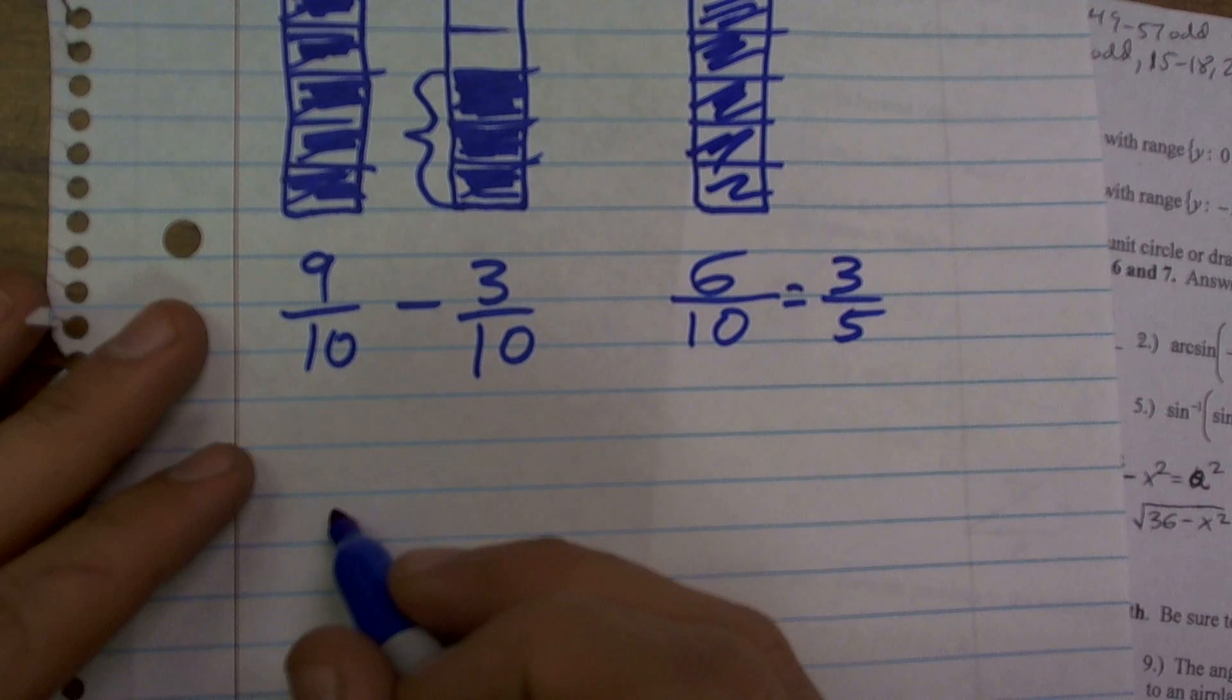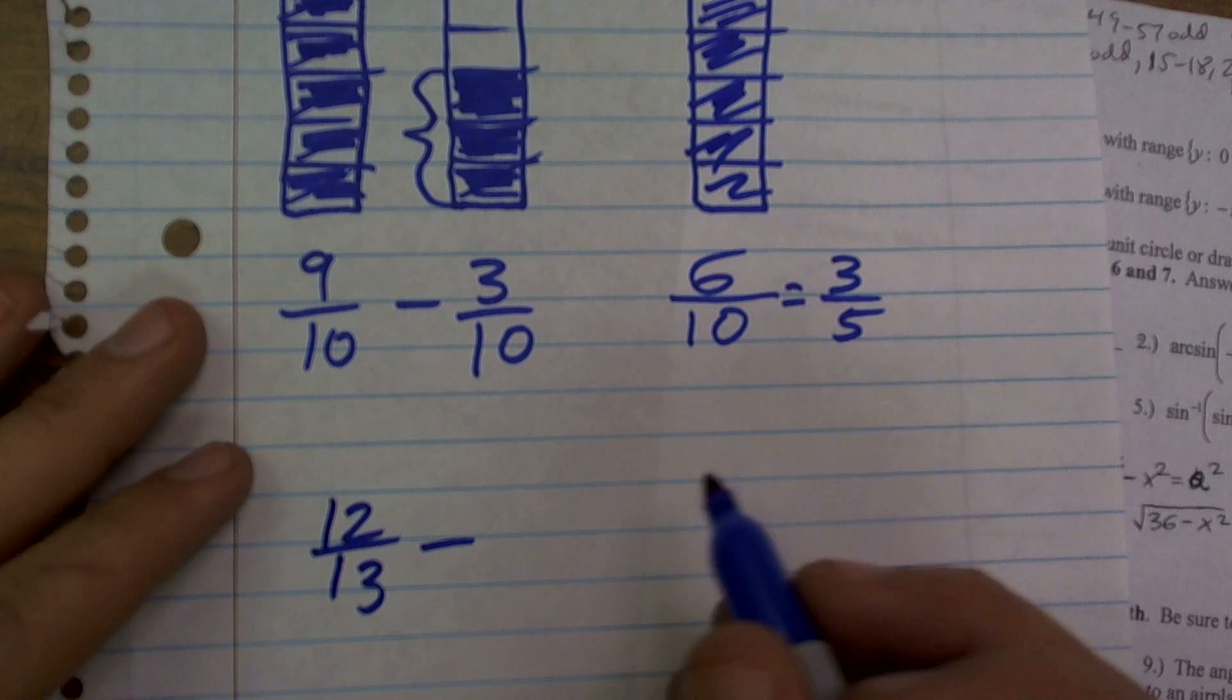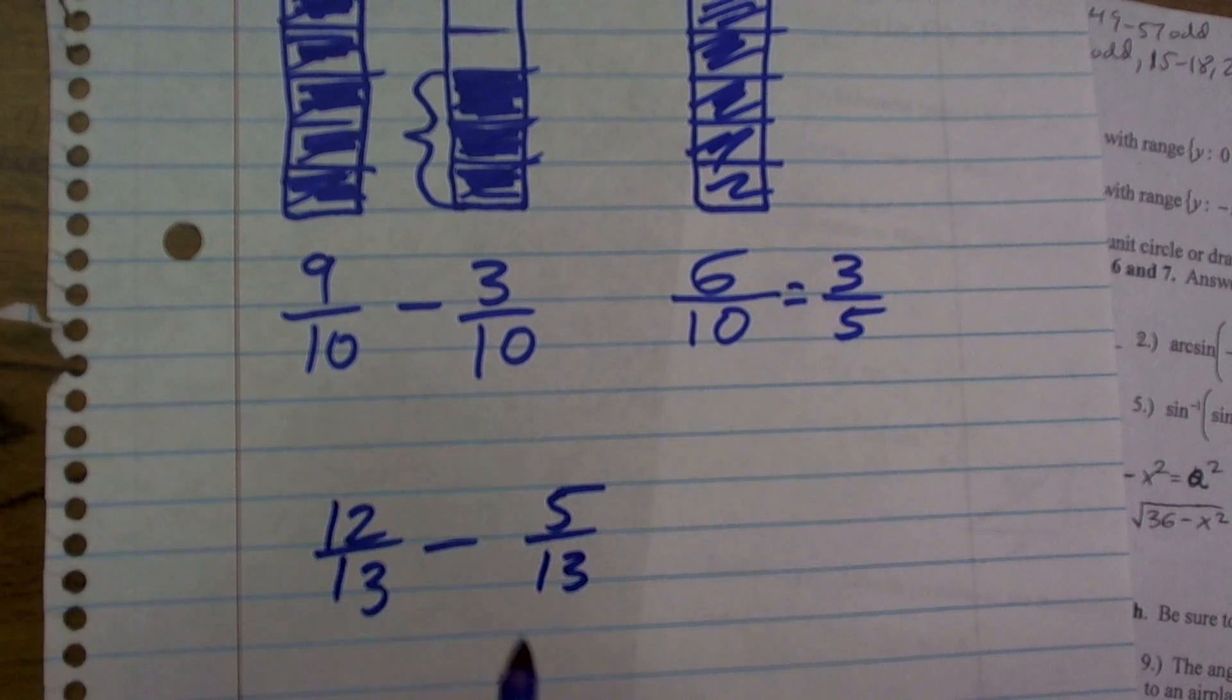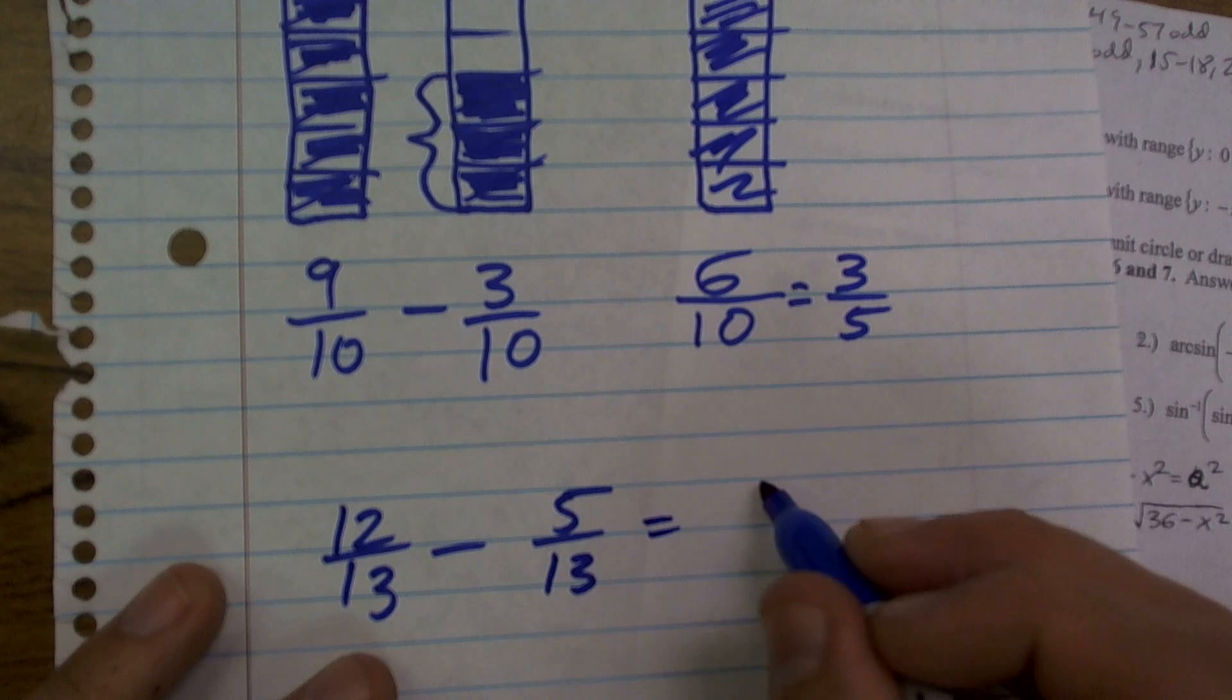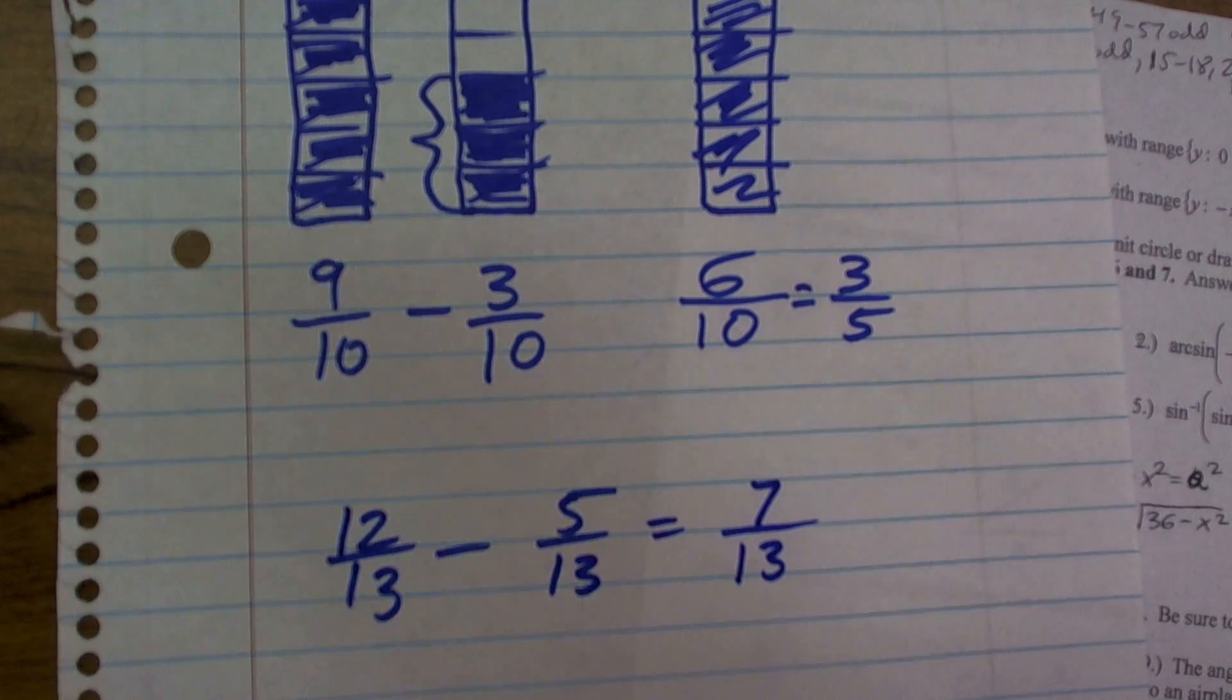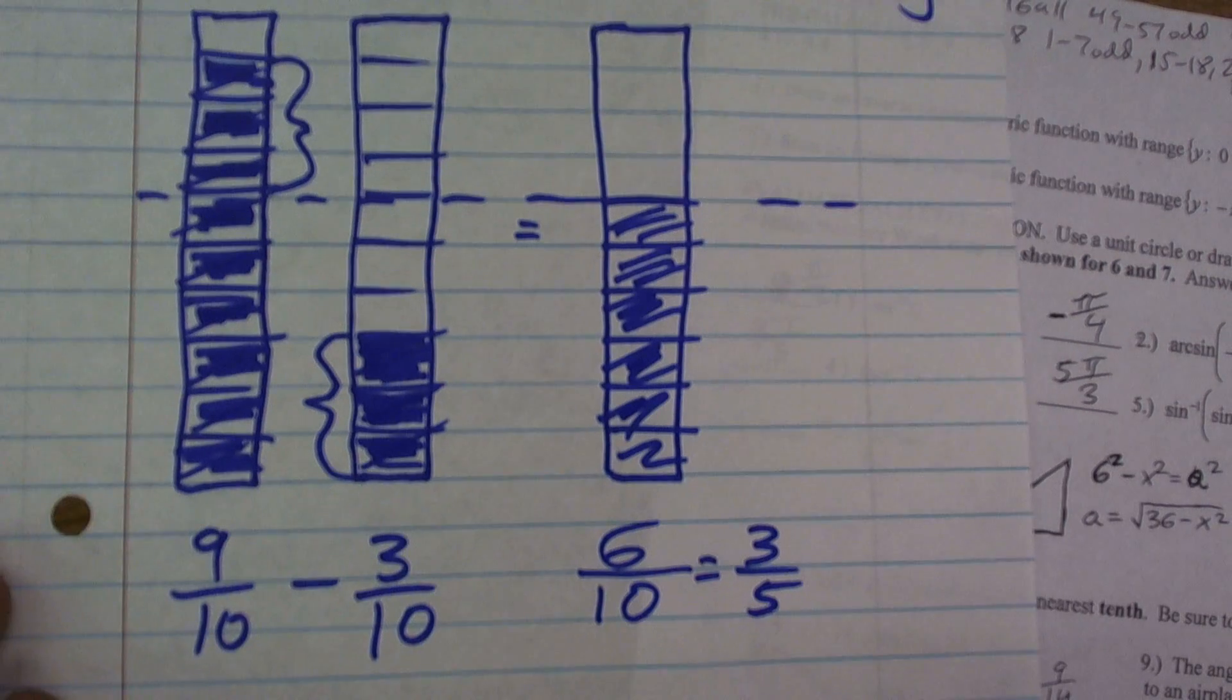Let's say I wanted to do 12/13 minus 5/13. Again, as long as my denominators are exactly the same, I can just subtract the numerators. So 12 minus 5 gives me 7/13. And that's really it for subtracting fractions when we have like denominators.